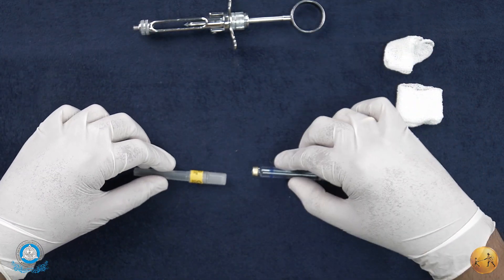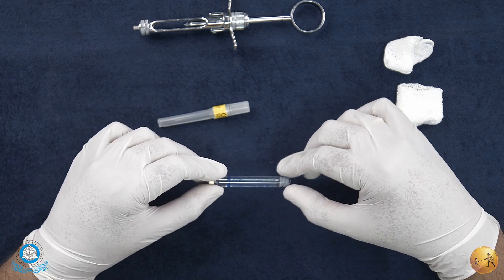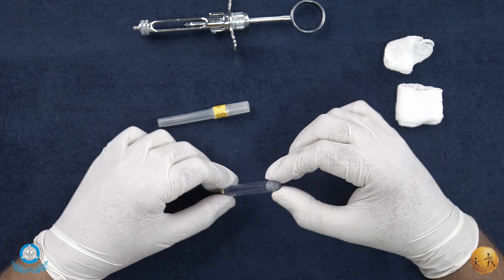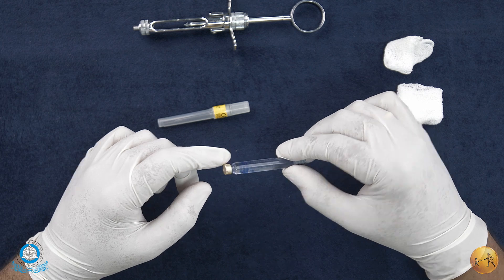Now moving on, we have the needle and the cartridge itself. We'll first talk about the cartridge. If you notice, this is a glass cartridge - it has a stopper and an aluminum cap with a diaphragm.